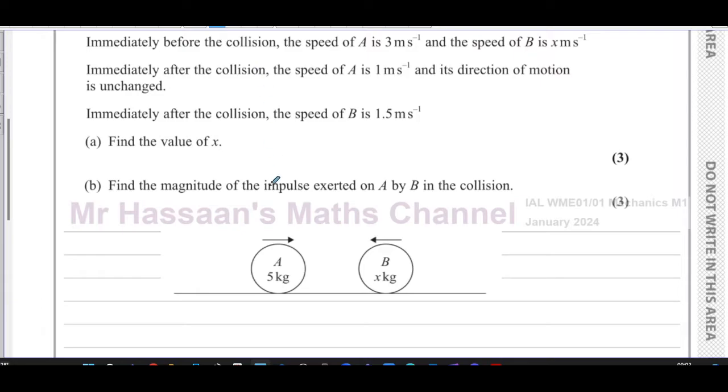So before the collision, I'm going to write the information before on top and the information after underneath so we can use conservation of momentum. I'm defining my direction of positive in this direction. A before has a speed of 3 meters per second, and B has a speed of X meters per second in this direction. After the collision, A's speed is 1 meters per second in the same direction, and B must be going in that direction at 1.5 meters per second.